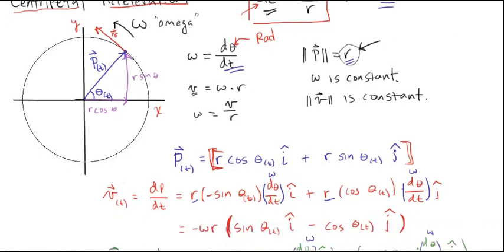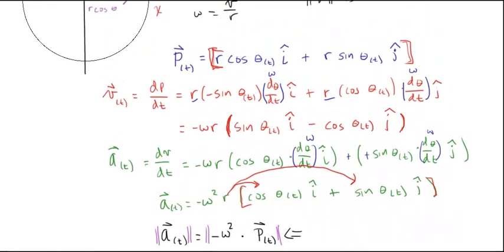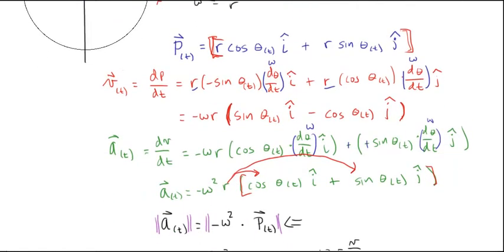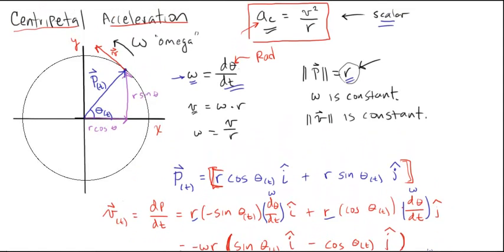So some interesting calculus in there — taking a few steps backward to take a step forward, but an interesting exercise to derive that the centripetal acceleration has a scalar value equal to v²/r. Along the way I introduced the idea of angular speed omega and angular displacement — the change in theta. Hopefully that was interesting and made sense.